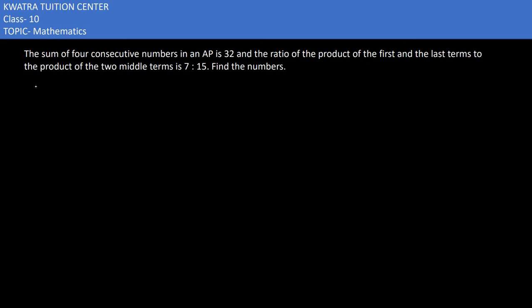Now we have four consecutive numbers. So I would be taking first number as a minus 3d, second a minus d, third I would be taking a plus d and last I would be taking a plus 3d. Now the question is why I am taking this? The question is given that there are 4 terms.